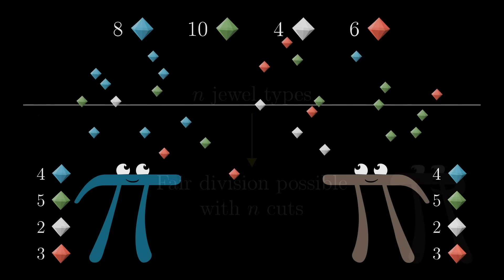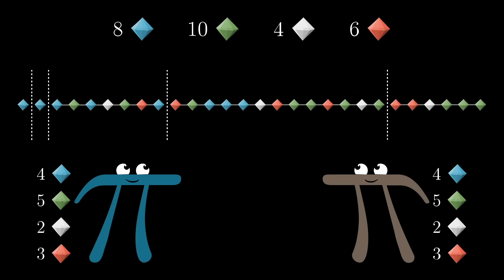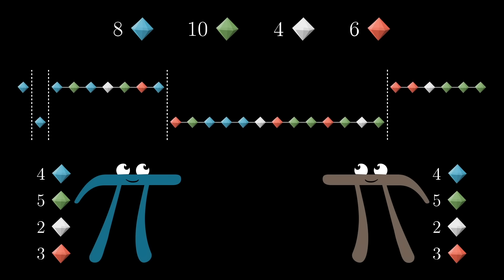So, with four jewel types in this example, no matter what random ordering of the jewels, it should be possible to cut it in four places and divvy up the five necklace pieces so that each thief has the same number of each jewel type.